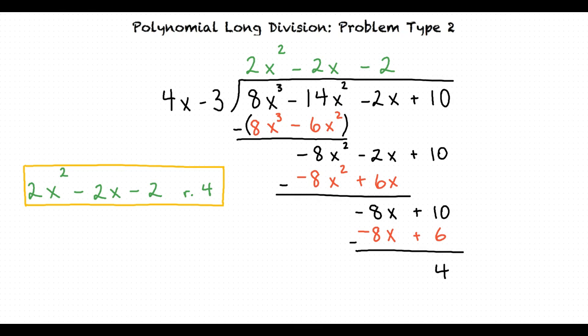Whenever the degree of the bottom term is lower than the degree of the divisor we are done. Whatever is left over is our remainder. That's exactly right. Great work!